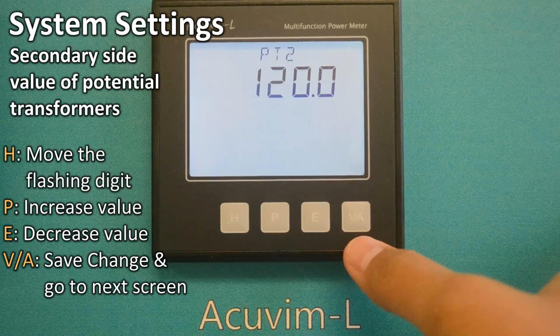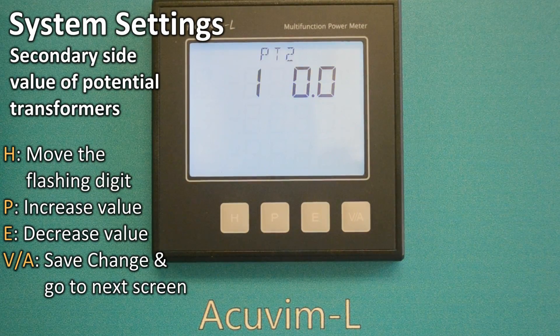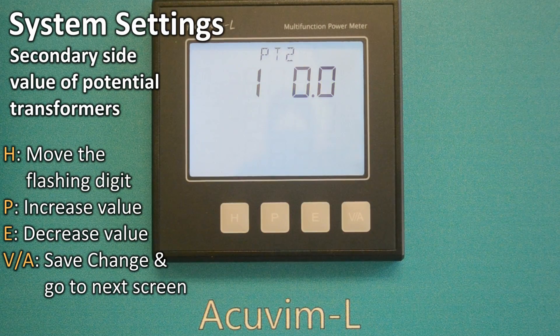If you do not have a potential transformer, simply leave PT1 and PT2 at the factory settings of 400.